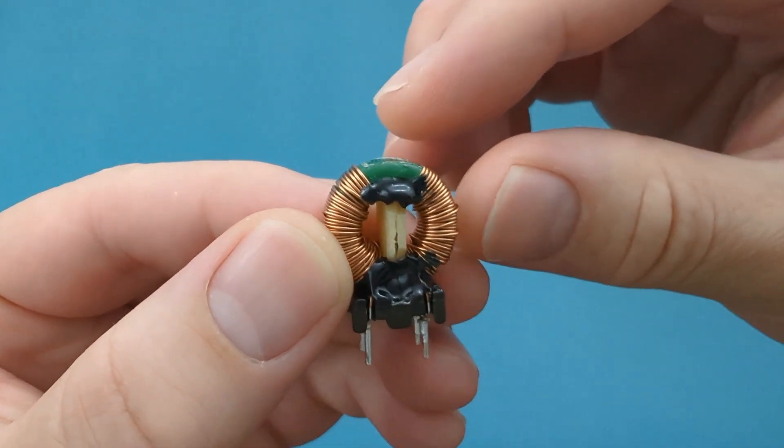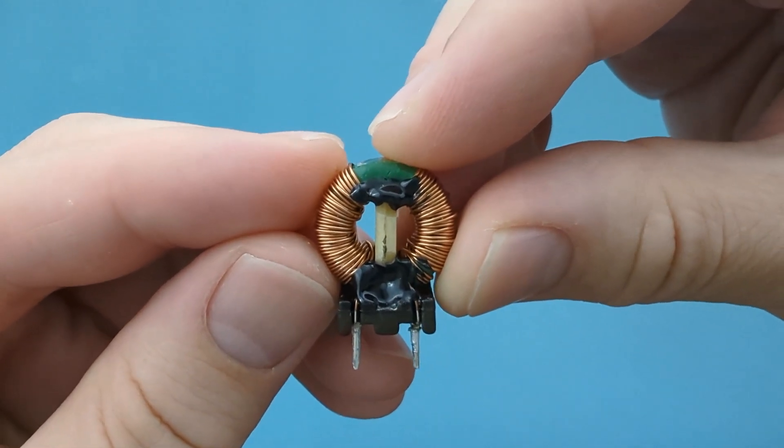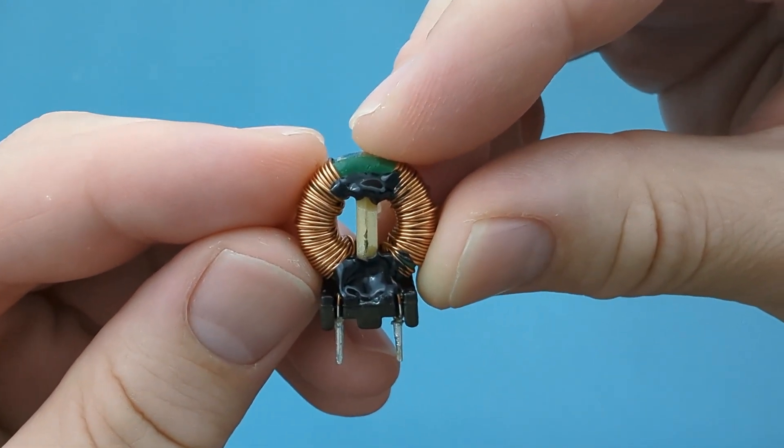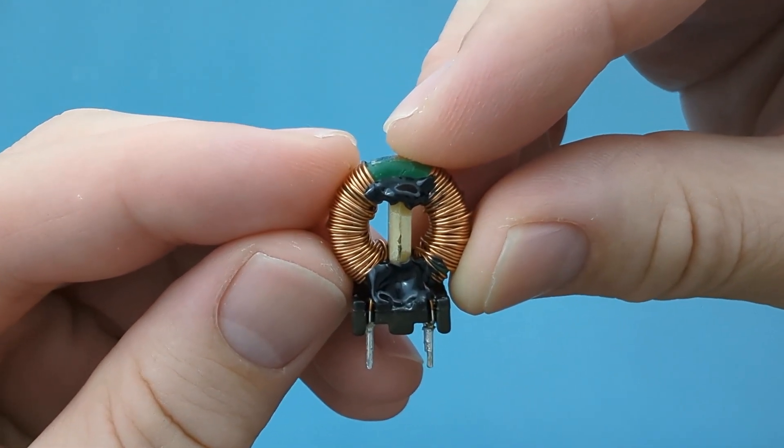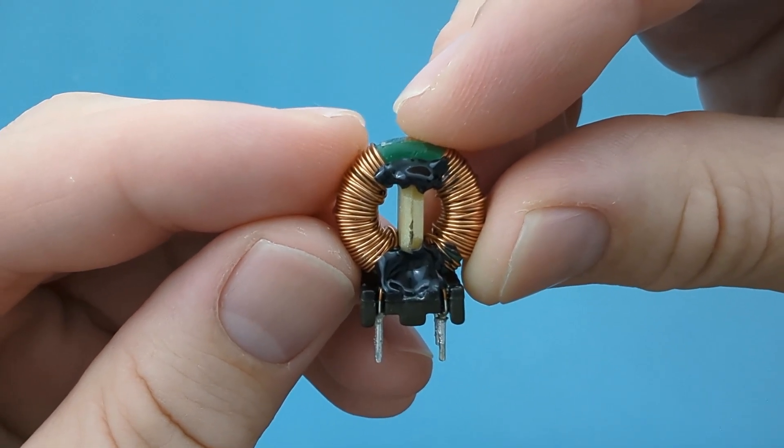THT or through-hole technology inductors have leads that are inserted into holes on the PCB and then soldered. They are generally larger and can handle higher power levels, making them suitable for applications like desktop motherboards and power supplies.